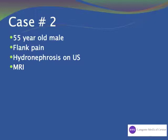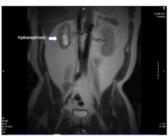He was sent for an MRI to evaluate for a possible mass. On the MRI you can see the hydronephrosis as well as a dilated proximal ureter that collimates to a mid-ureteral obstruction.